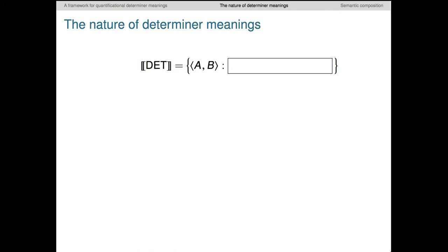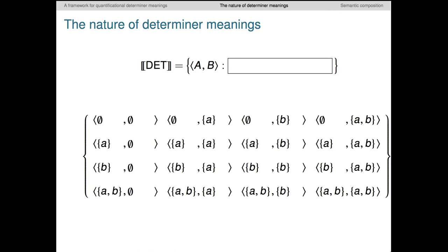But what are these sets of pairs of sets, really? They're awfully complex and massive objects. To get clearer intuitions about what they're like, let's look in more detail at these previous examples, concentrating on the underlying meanings. To do this, I've fully specified the set of all pairs of sets for a small domain, consisting of just two entities, A and B.